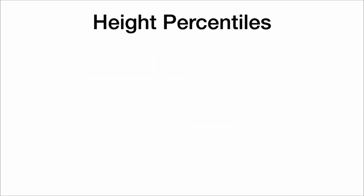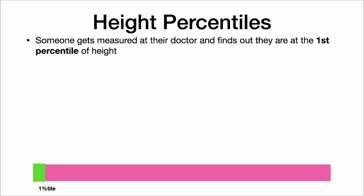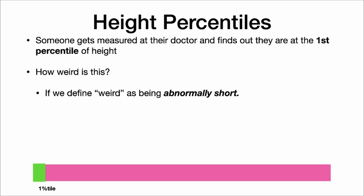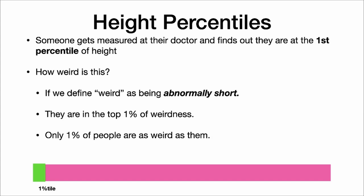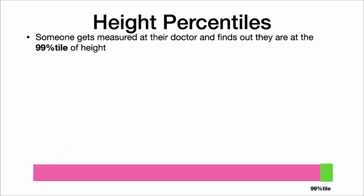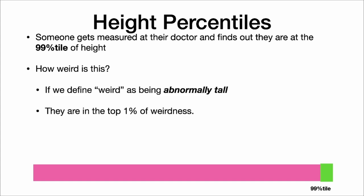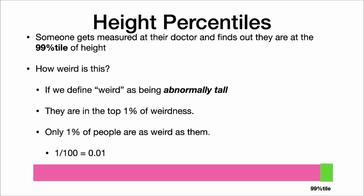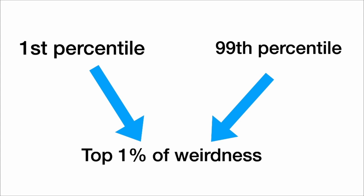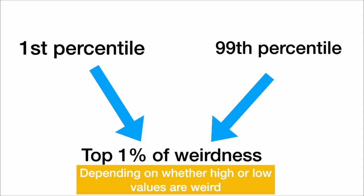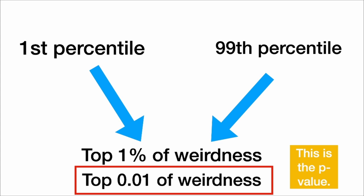Level 2: percentiles. Someone gets measured at their doctor and finds out they are at the first percentile of height. If we define weird as being abnormally short, they are in the top 1% of weirdness — only 1% of people are as weird as them. So 1 out of 100 is .01. Similarly, someone at the 99th percentile of height — if we define weird as being abnormally tall — is also in the top 1% of weirdness. So .01 is our p-value of how weird they are. The first percentile and the 99th percentile are really the same: the top 1% of weirdness, just in different directions.